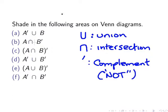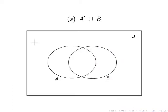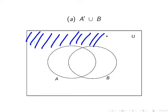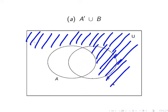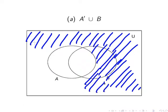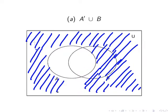Let's begin with the first example: the complement of A union B. First, let's discuss what the complement of A is. The complement of A is anything that is outside of A, including the relevant regions of B.